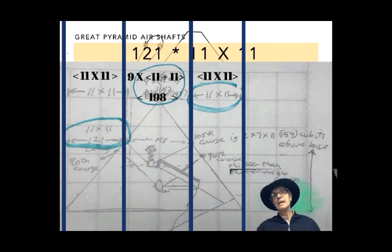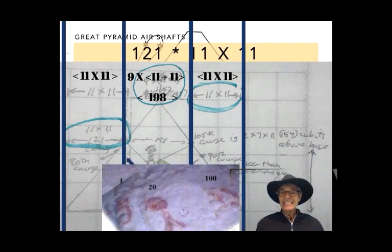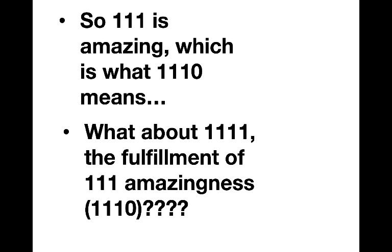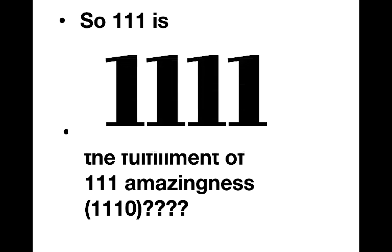And then the 198 cubits in the middle are 9 times 11 plus 11. So I just think that it's incredible that these numbers are in the Great Pyramid. So amazing, at least I think, this whole 111 thing.